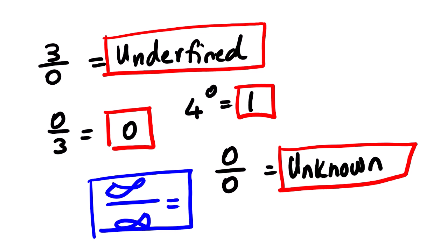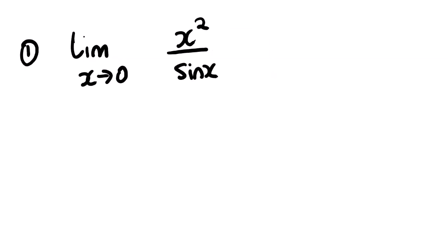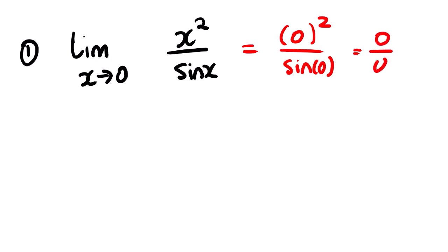Let us look at practical examples. Looking at our first example, when we directly substitute we are going to have 0 squared over sine 0, which gives 0 over 0. You can see that this is not known.